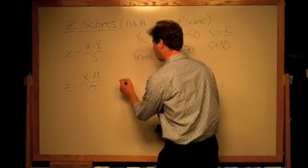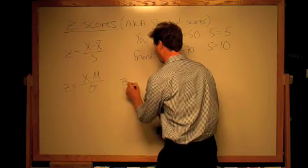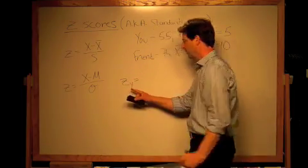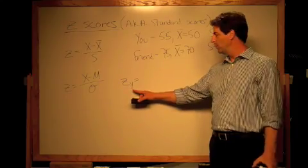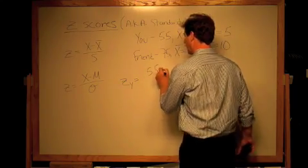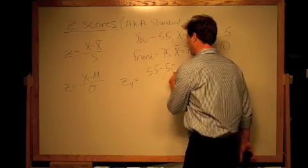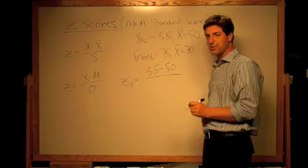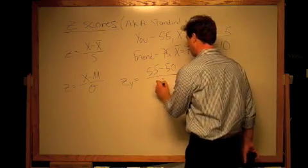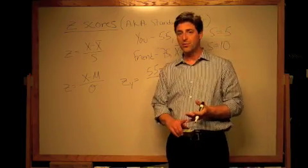So for you, the z score for you is your score minus the mean divided by the standard deviation in your sample. So you got a z score of one.